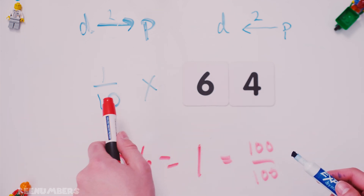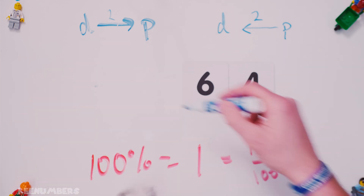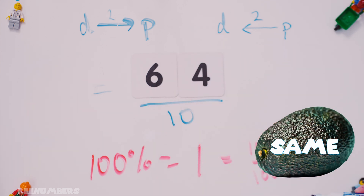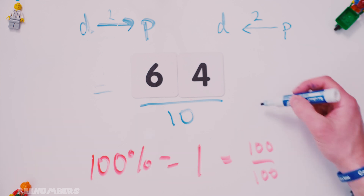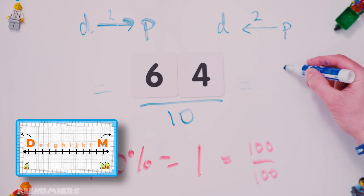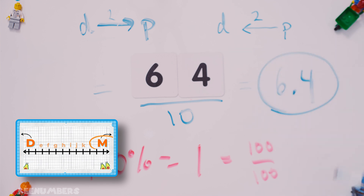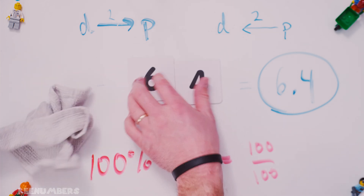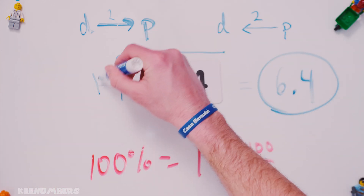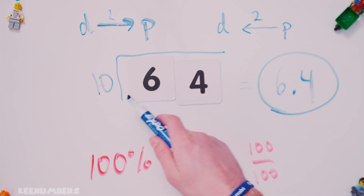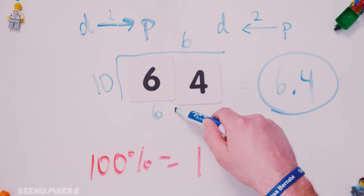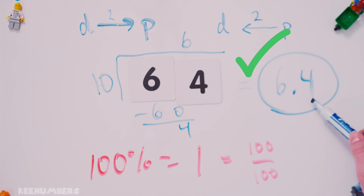Now you can see it — this is 64 divided by 10. The shortcut is you simply move this decimal back one space and you get 6.4. We've talked about that in a different video — I'll link it below. If you need a refresher, you simply pound out the division: 64 divided by 10. 10 can't go into 6, but it does go into 64 six times. You have a difference of 4, so that's where the 0.4 comes from.